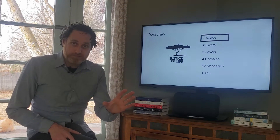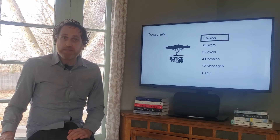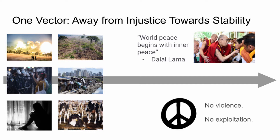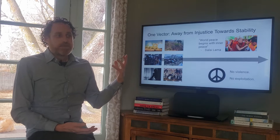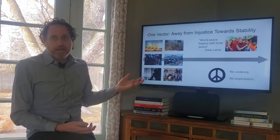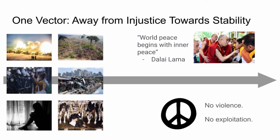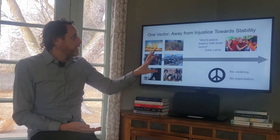Every framework and every human enterprise has some kind of vision, some organizing principle. This one is the concept of moving away from injustice toward stability—world peace, harmony, coexistence, unity. The opposite of that—injustice—looks like war, oppression, loneliness and suicide, animal oppression, poverty, and environmental devastation.